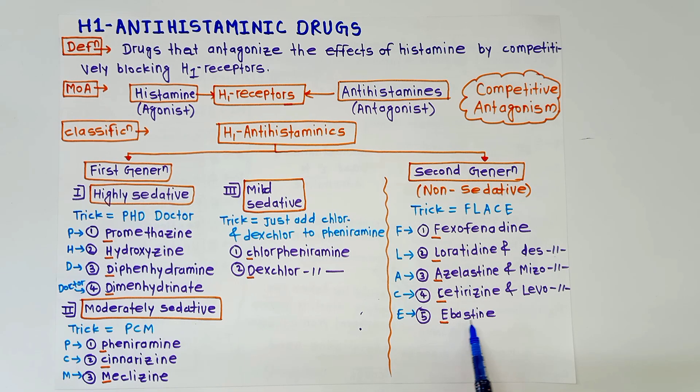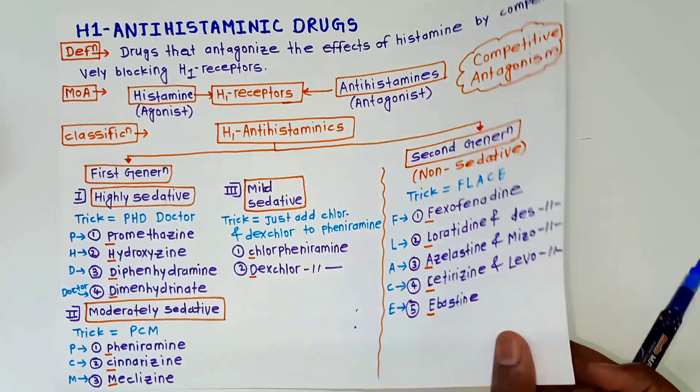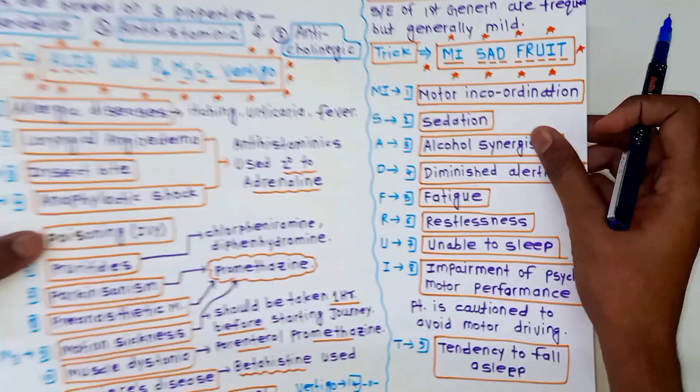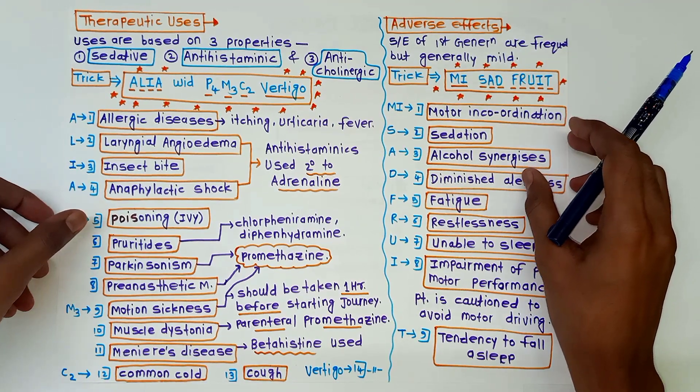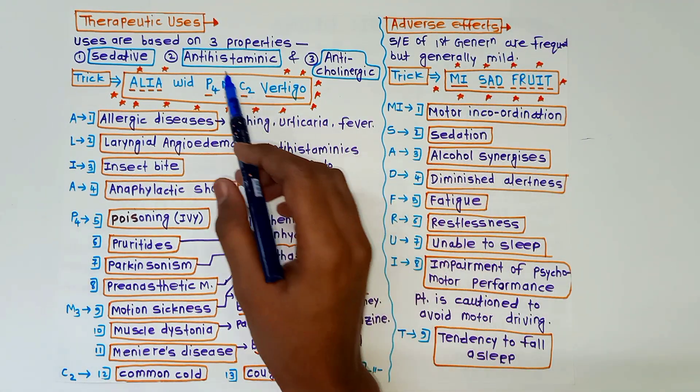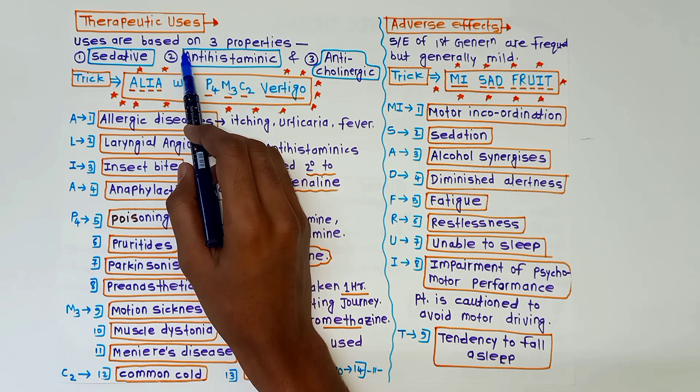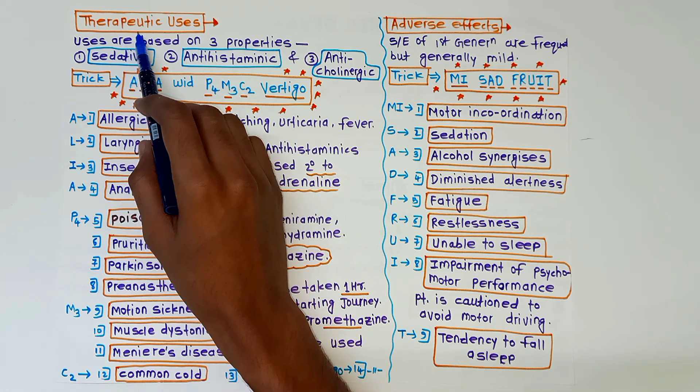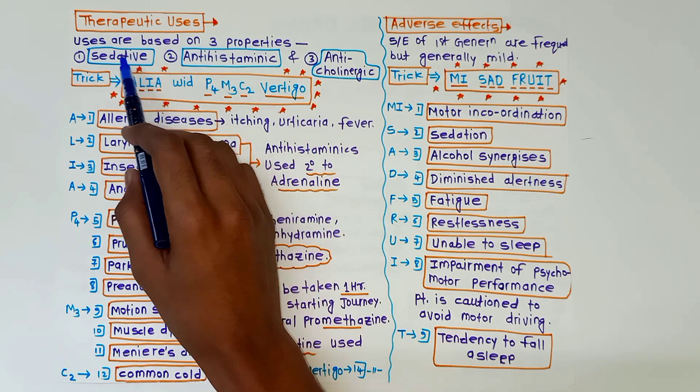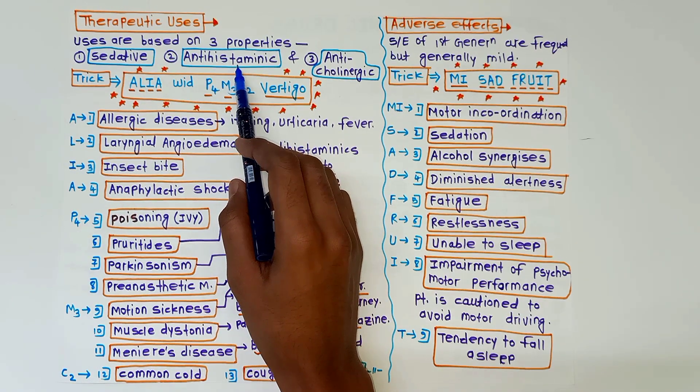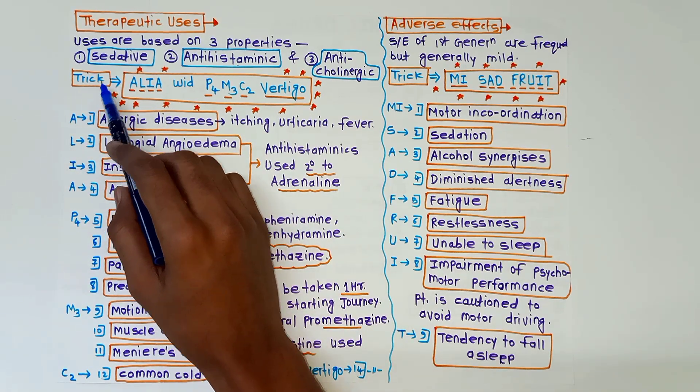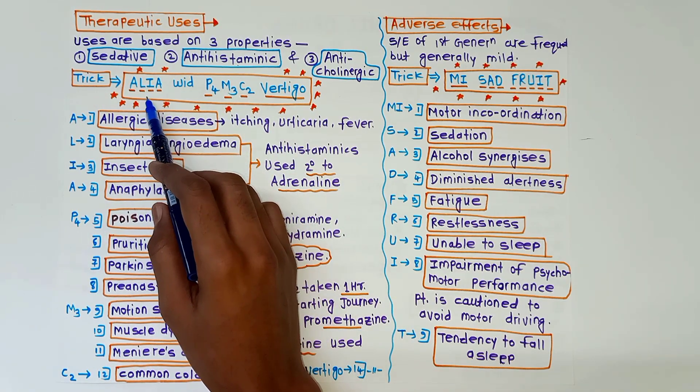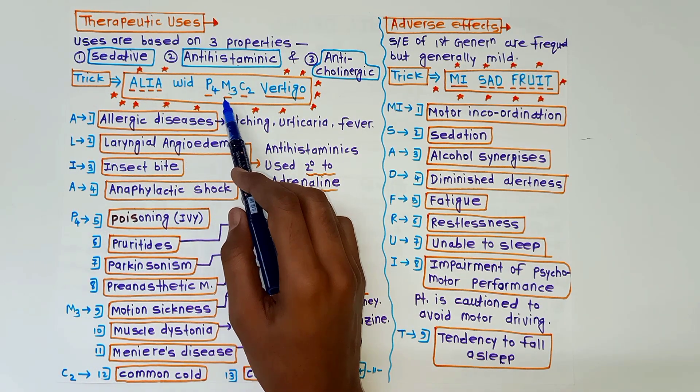Now the next point is therapeutic uses and adverse effects. First of all, therapeutic uses of H1 antihistaminics. The uses of these drugs are based on three properties: sedative, antihistaminic property, and anticholinergic property. So trick to remember therapeutic uses is ALIA with P4 and M3C2 vertigo.